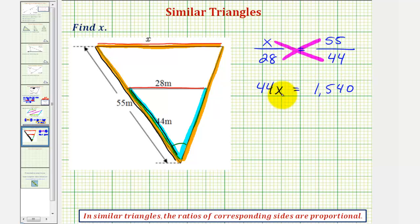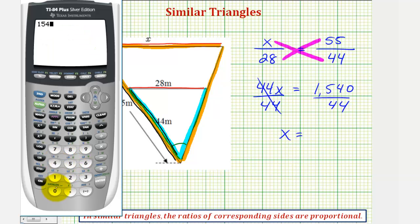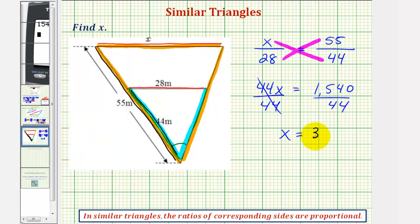And now to solve for x, we divide both sides by 44. So we have x equals 1540 divided by 44 equals 35. We can see from the diagram the units would be meters. So the length of side x is 55 meters.